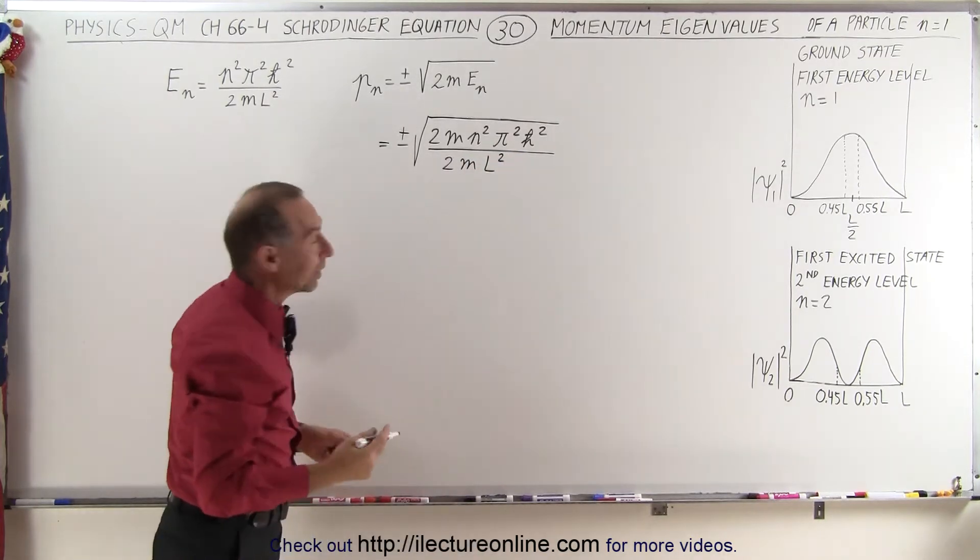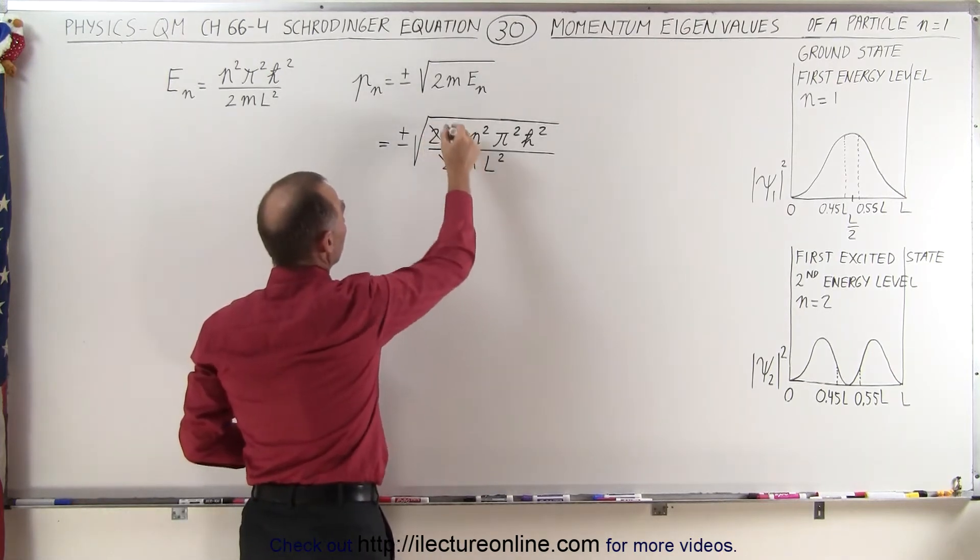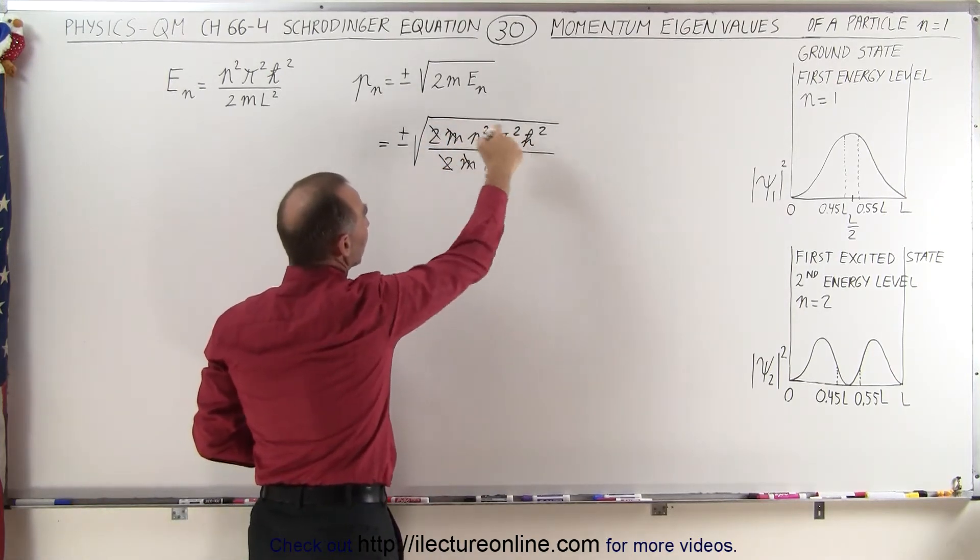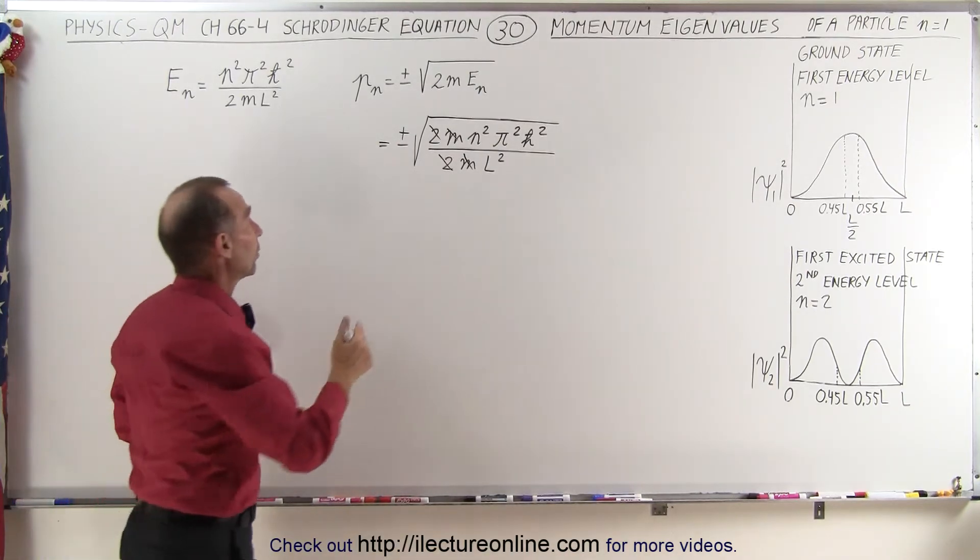Now right away we realize that both the 2's and the m's can cancel out. So the 2's are gone, the m's are gone, and everything else underneath the square root sign is squared.